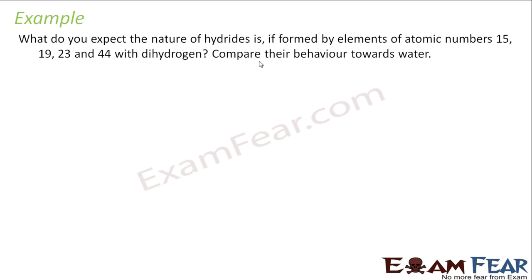So the first is atomic number 15. Z equals 15, what is there? It is phosphorus. Phosphorus forms hydride PH3, and this is nothing but covalent, non-metallic.